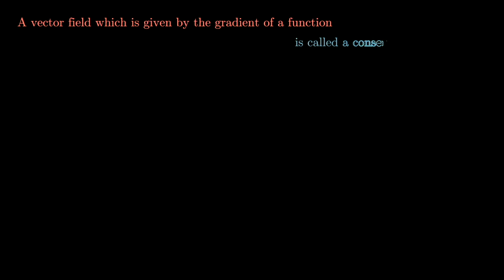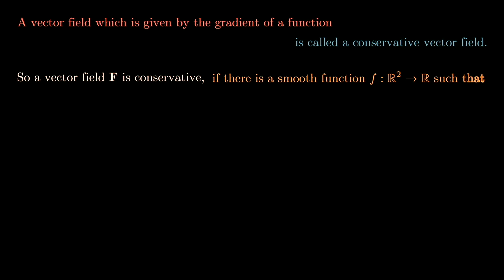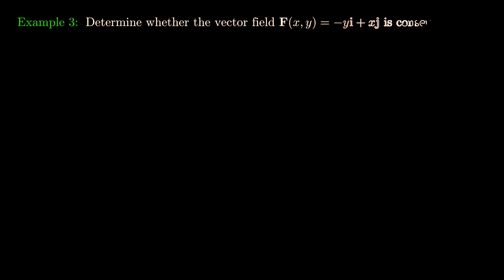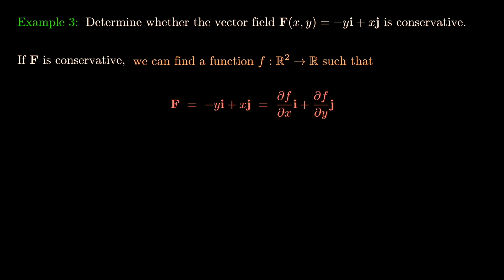A vector field given by the gradient of a function is called a conservative vector field. A vector field F is conservative if we can find a smooth function f: R2 → R (or R3 → R) such that F = nabla f. Let's determine whether F(x,y) = -y î + x ĵ is conservative. Assuming it is, we equate components: ∂f/∂x = -y.